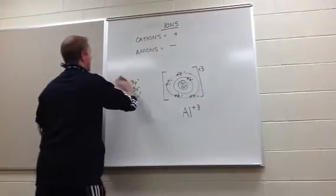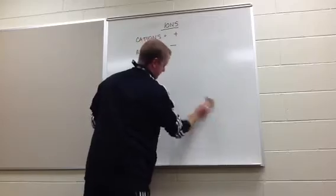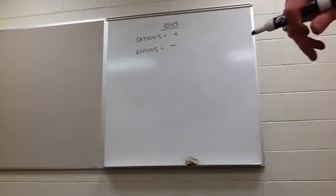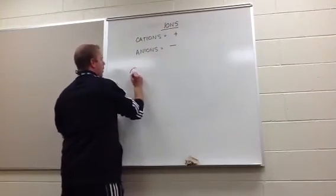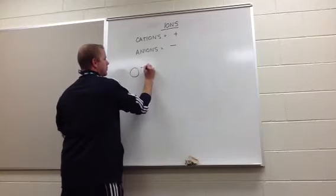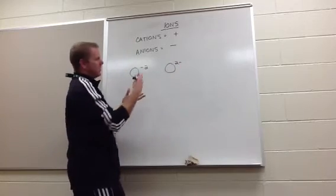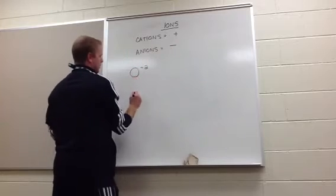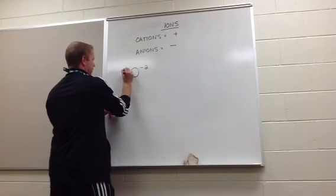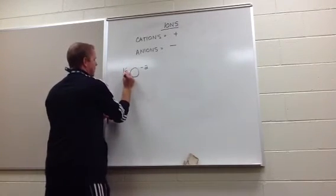Now let's do an anion. Let's do oxygen — O²⁻. Sometimes you'll see it written as O two minus; don't let that confuse you, it's the same thing. So with oxygen, we're going to use mass number 16. You go to the periodic table and find its atomic number, which is 8.